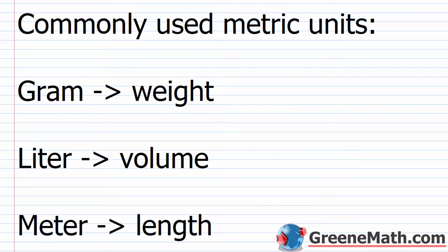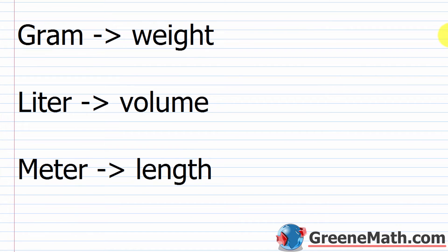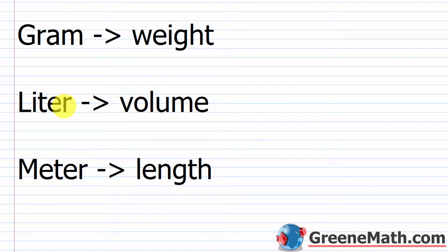Let's start out by looking at the commonly used metric units. We have three to cover today: the gram, which is for weight; the liter, which is for volume; and the meter, which is for length. One of these you've all seen — the liter is used when you buy a two-liter of Coke, Sprite, Pepsi, or whatever soda you'd like to consume.